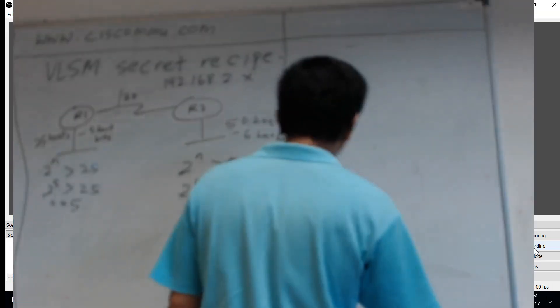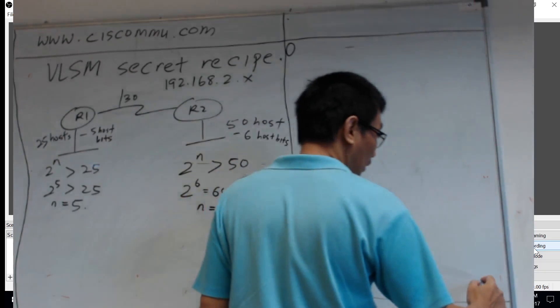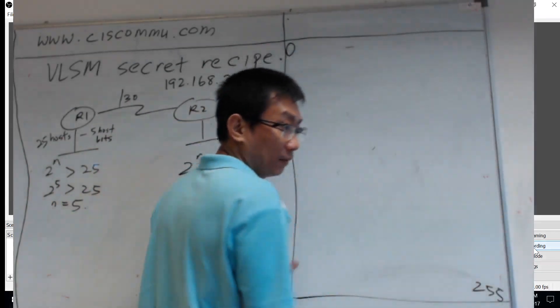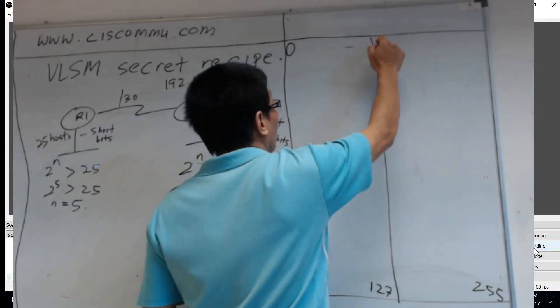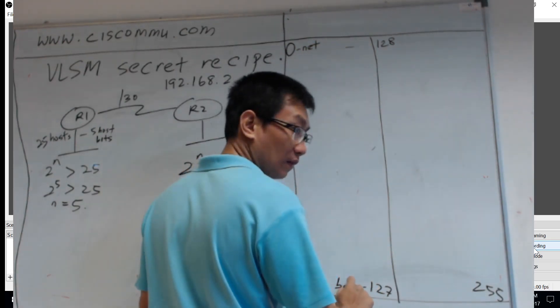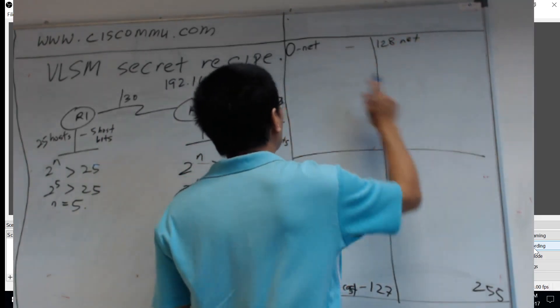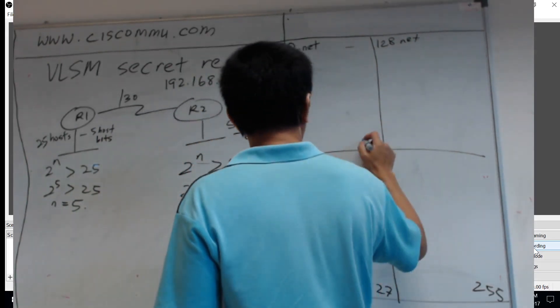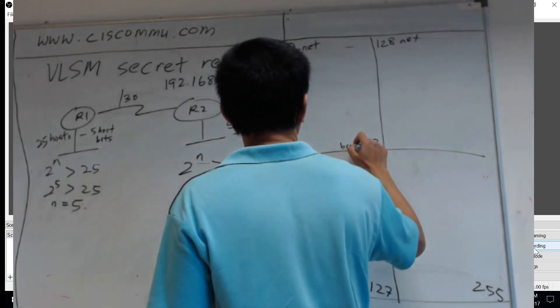So first, you draw a paper. 0 and over here, 255. Then, this one big piece of paper, you split it into half. 127, 128. So this is one network, this is the one half. Then, this one is also the network. Then you split it into half. What is the half of here? 64 and 63. So this is the network, this is the broadcast.